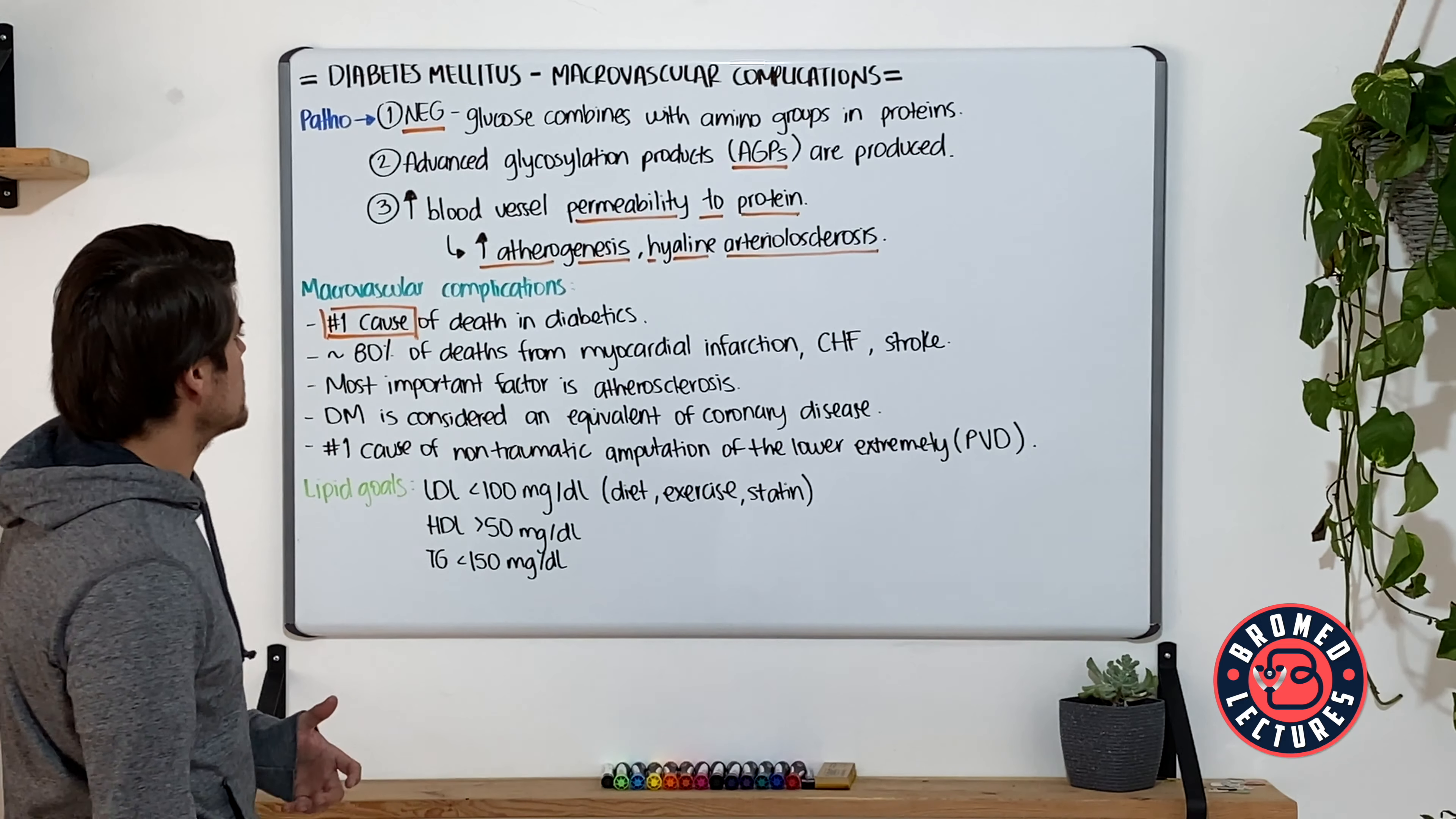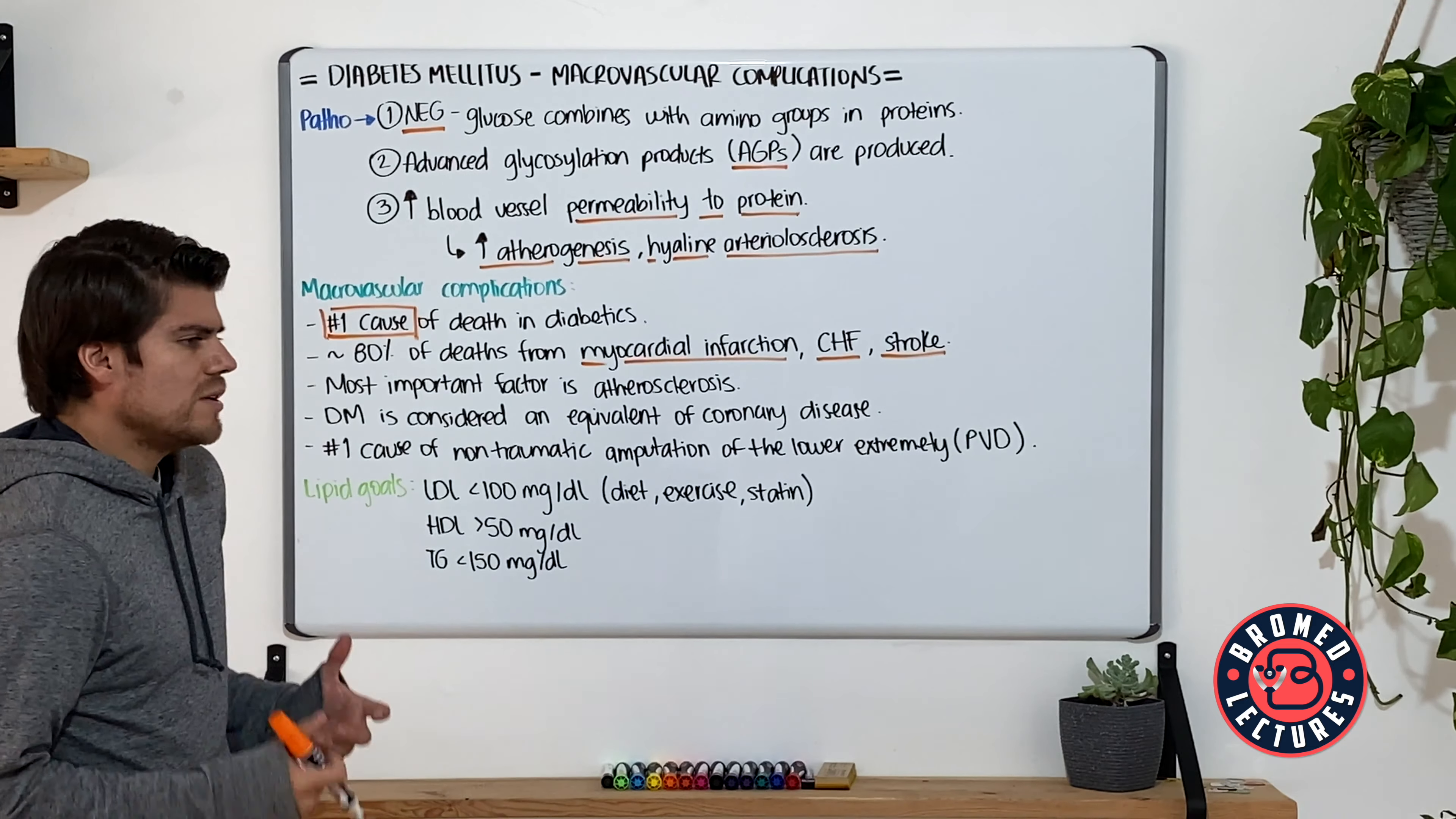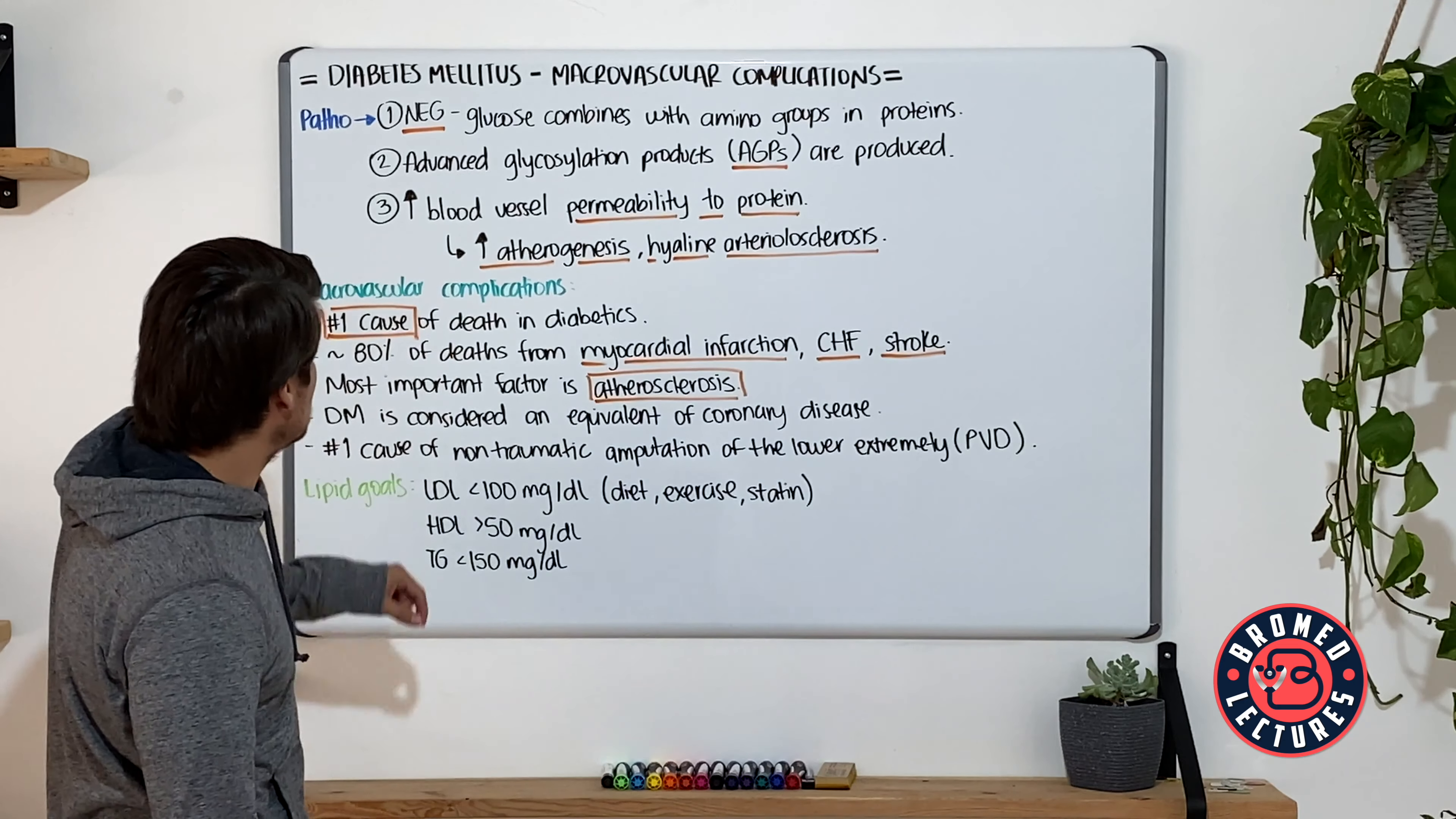Now, the presenting macrovascular complications, remember that it's going to be the number one cause of death in diabetic patients with around 80% of the deaths from either myocardial infarction, congestive heart failure development, or stroke.